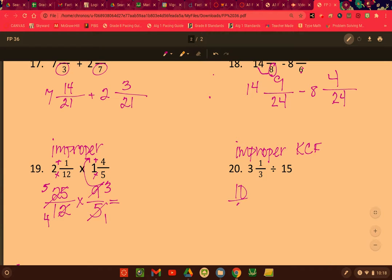So 3 times 3 plus 1. So 10 thirds divided by 15 over 1. Right? We're just going to make that a fraction. And now, keep it.